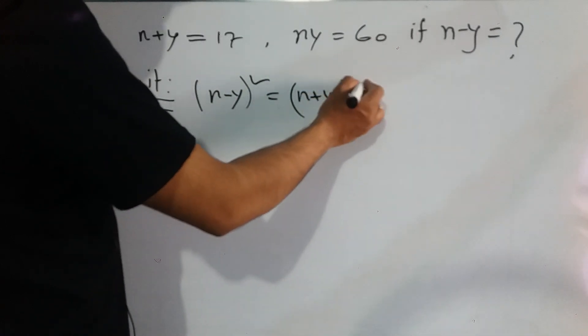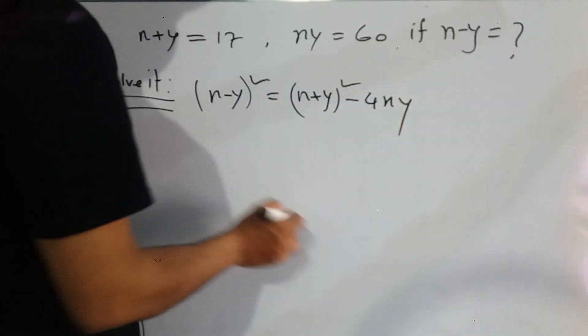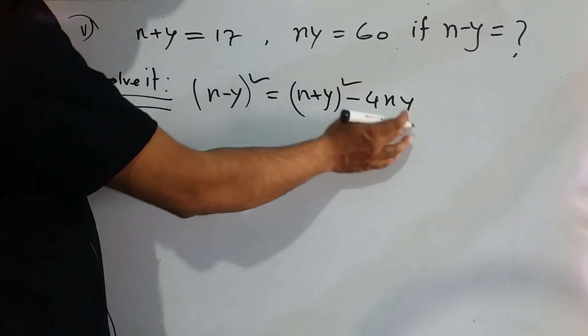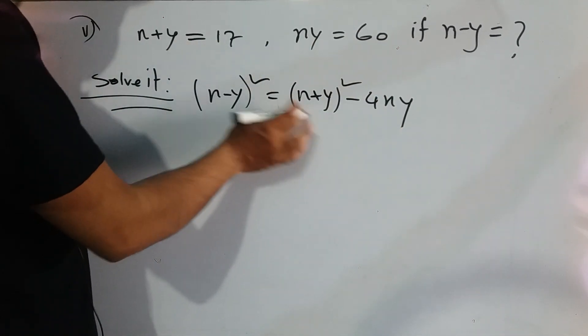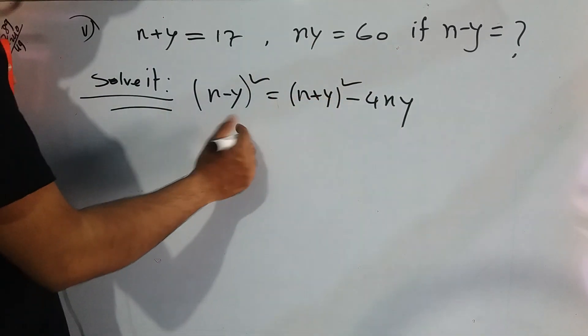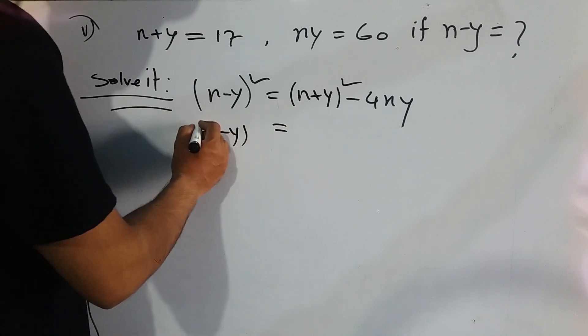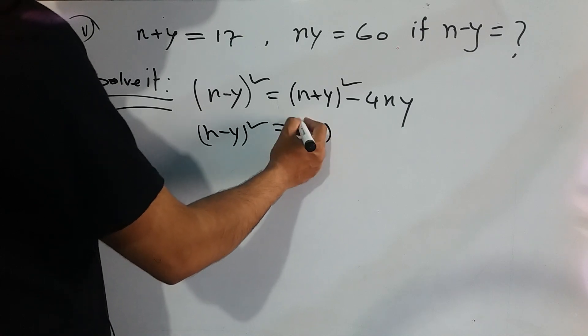Whole square minus 4xy. So we can now input the values, the xy value and x plus y value. So we have input now: x minus y whole square equals 17 whole square minus 4 into xy, we know 60.